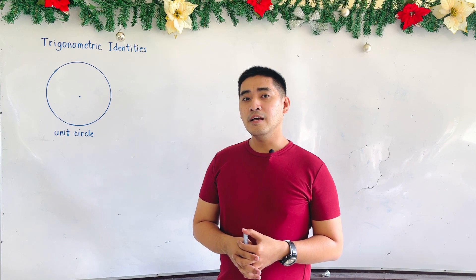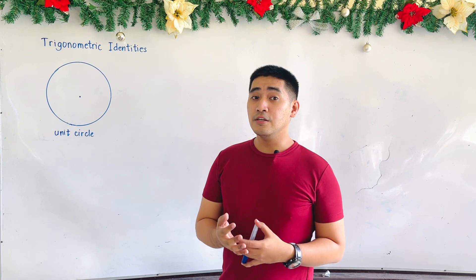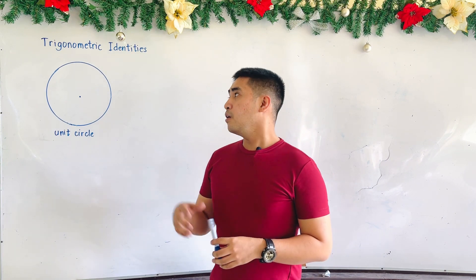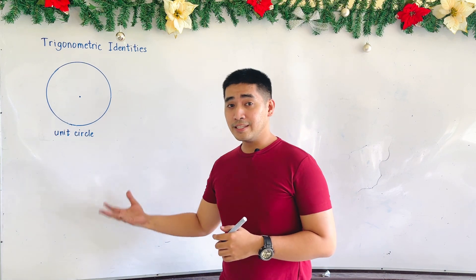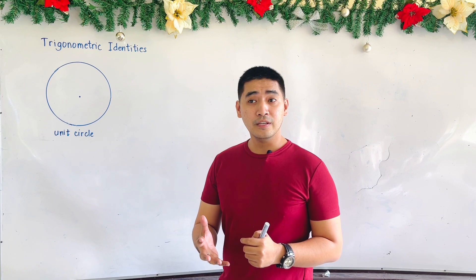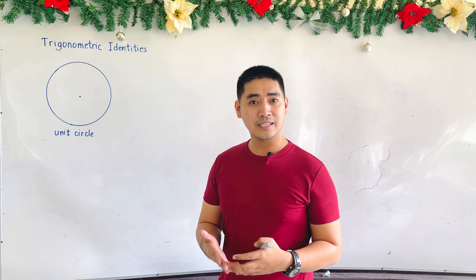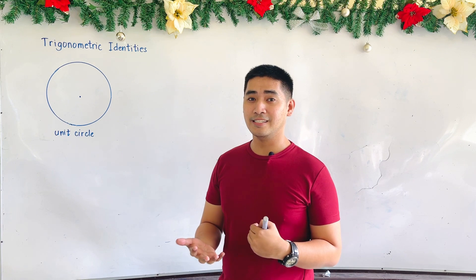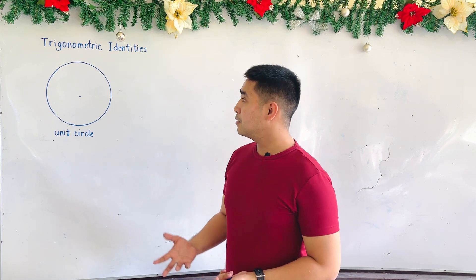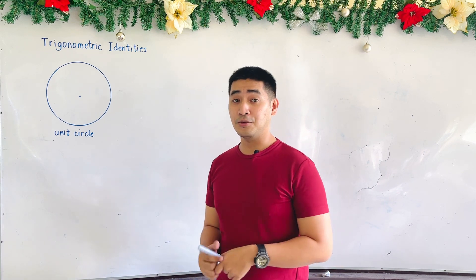In this lesson, we will be able to derive those identities using a unit circle. We will be using these trigonometric identities in order to prove if an equation is really an identity. Last time, we discussed whether an equation is a conditional equation or an identity. Today, we will name the different trigonometric identities using a unit circle.